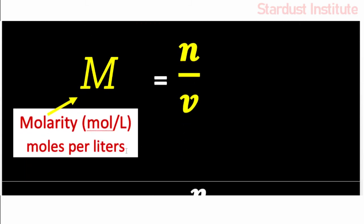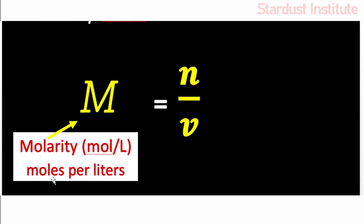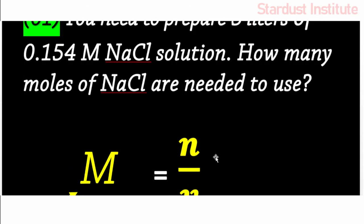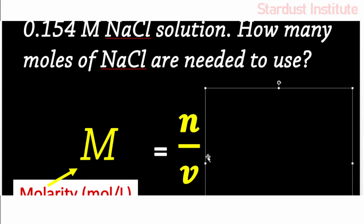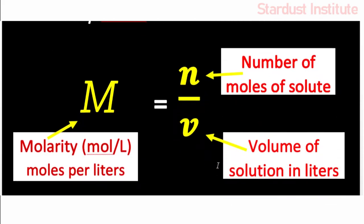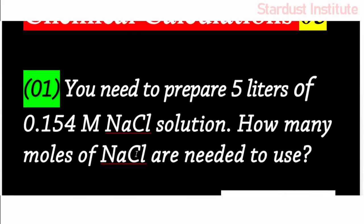Where M is molarity in units of moles per litre, N is the number of moles of solute, and V is the volume of solution in litres. We have been given: volume of solution = 5 litres, and molarity = 0.154.